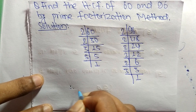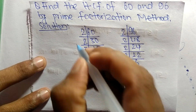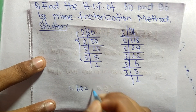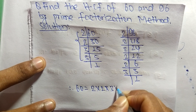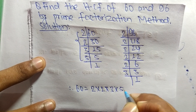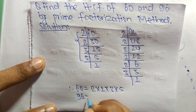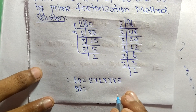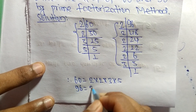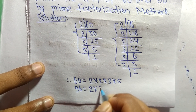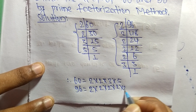Now from these prime factors we can write: 60 is equal to 2 times 2 times 3 times 5. Likewise, 96 is equal to 2 times 2 times 2 times 2 times 2 times 3.